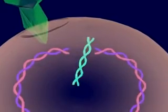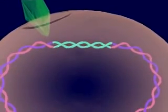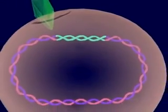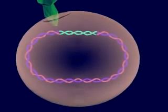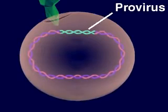Once inside the cell, the viral DNA inserts itself into a specific site in the chromosome of the host cell. Viral DNA is then called a provirus.